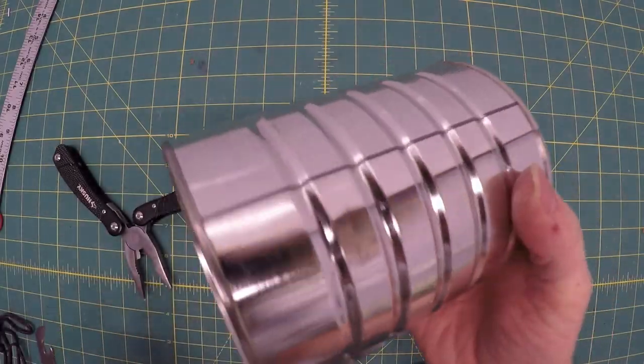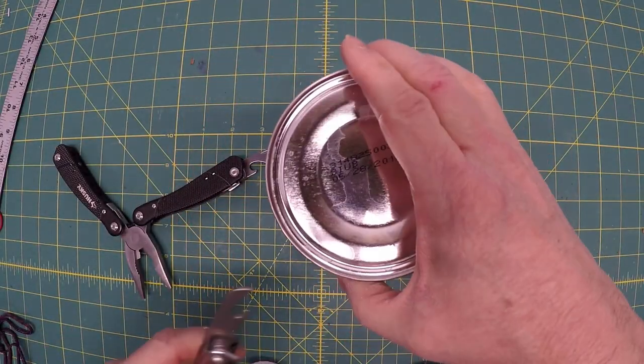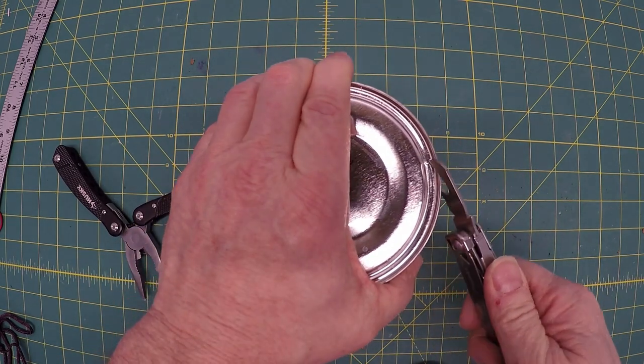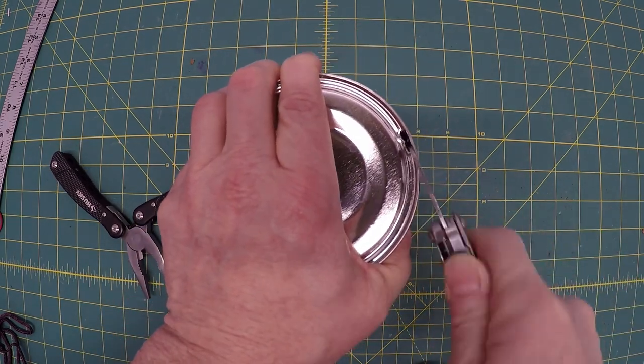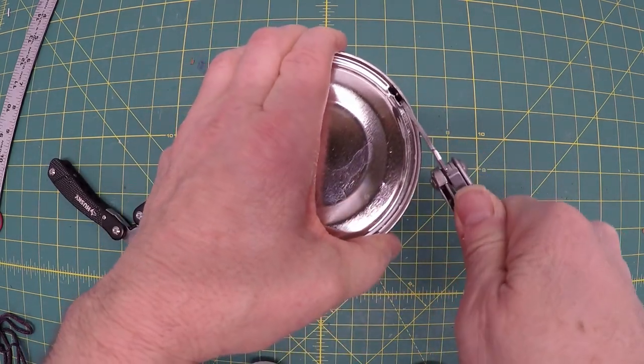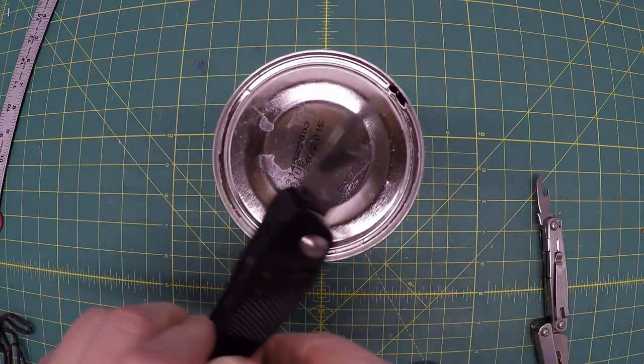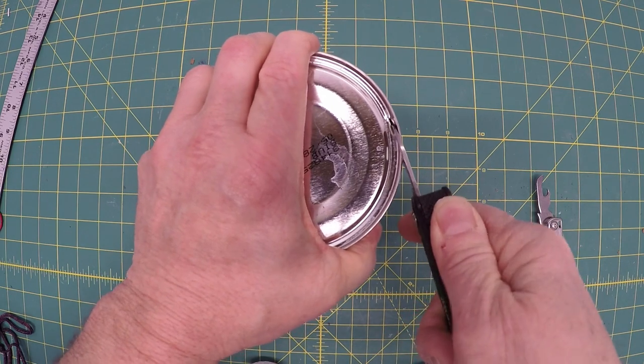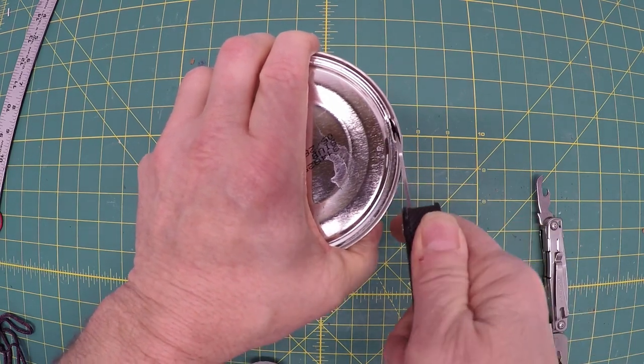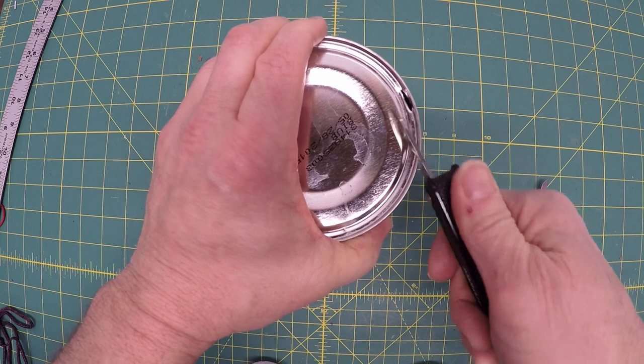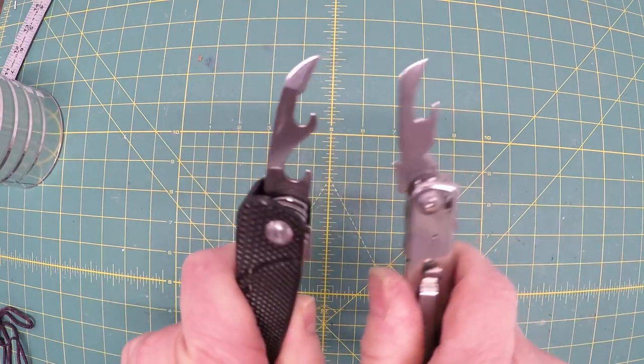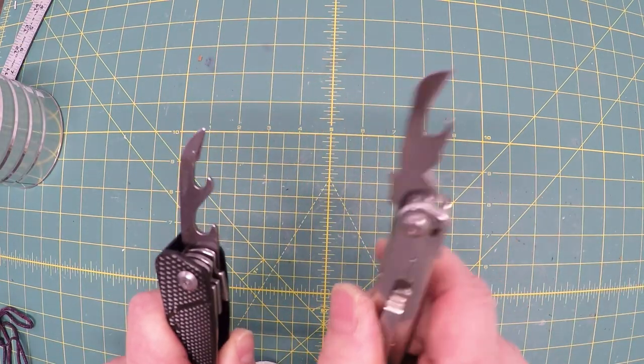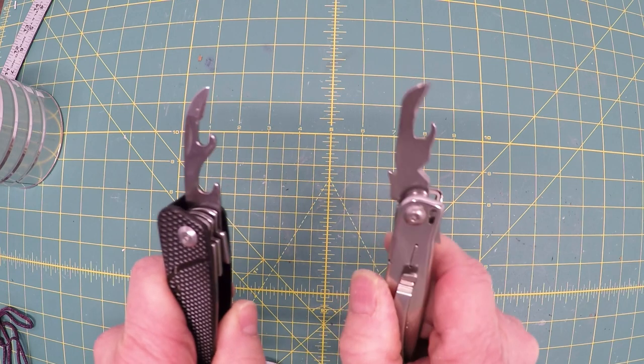Can opener test. This is just an old coffee can I had on my workbench. Leatherman. Oh yeah. It laughs at this can. Let's try the Husky. A little bit of a grip problem. But once you get used to it it works just as well. I feel like if I got to open a can with either one of these, I give the edge to the Leatherman Wingman.